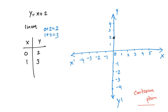Now, x is equal to 1 and y is equal to 3. If we have a negative value, we will add x equals minus 2. Then y is equal to minus 2 plus 2, which equals 0. So x equals minus 2 and y equals 0. We will mark this point and draw a straight line.